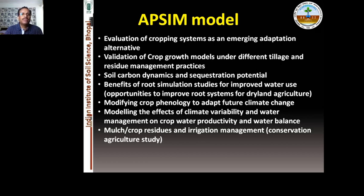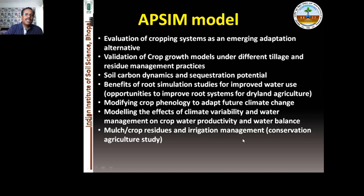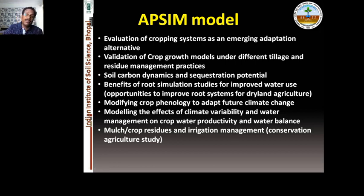This model can be used for soil carbon dynamics — you can find the sequestration potential of different soils under different cropping systems, nutrient or carbon management practices, or conservation practices. Benefits of root simulation studies to improve water use can also be explored. You can model the effects of climate variability on water management, crop water productivity, water balance, mulch, residue, and irrigation management.